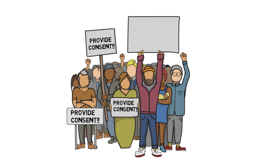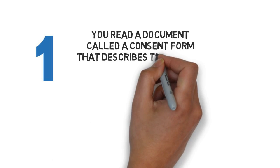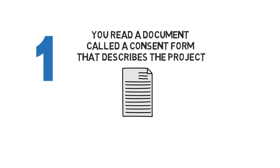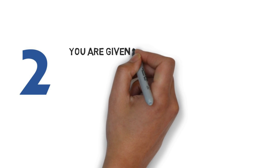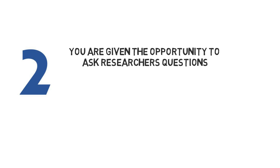You give informed consent in three steps. First, you read a document called a consent form that describes a project. Second, you are given the opportunity to ask researchers questions if you don't understand the study or aspects of participation.